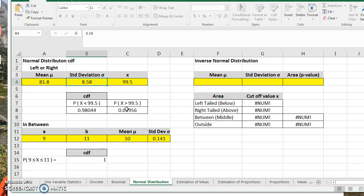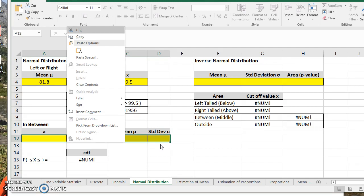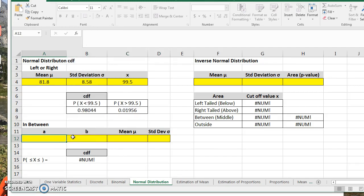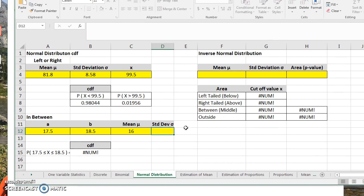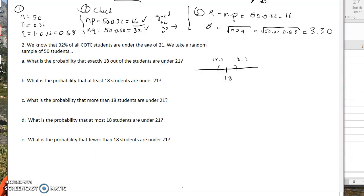and I go to my normal distribution. We're actually going to use this in-between tab this time. We're going to go right below 18, so we're going to use 17.5, and then we're going to use 18.5, and then we're going to use a mean of 16 and our standard deviation was 3.30. So the probability is 10%.